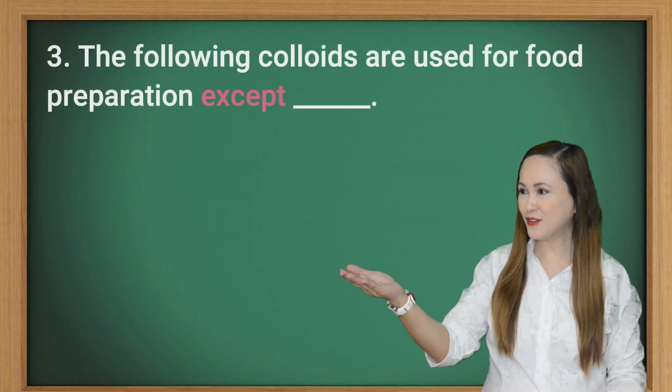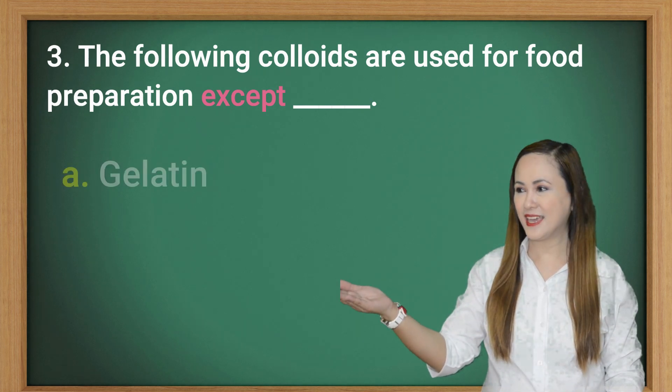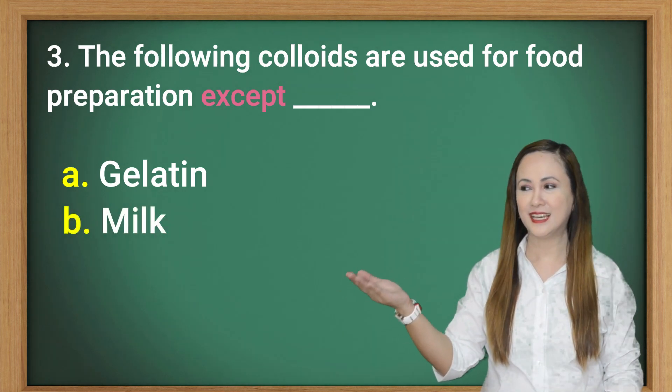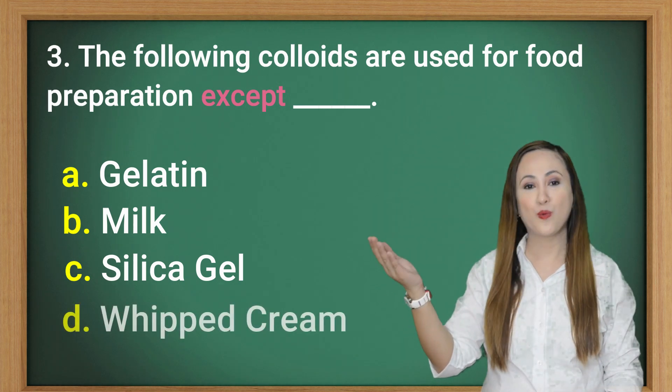Number three, the following colloids are used for food preparation except A, gelatin. B, milk. C, silica gel. D, whipped cream.